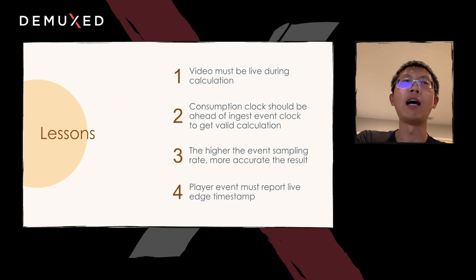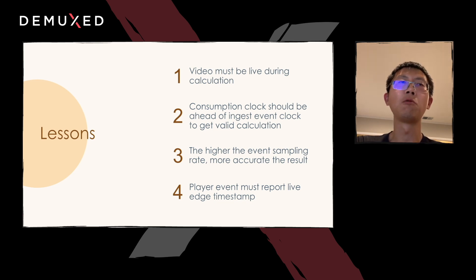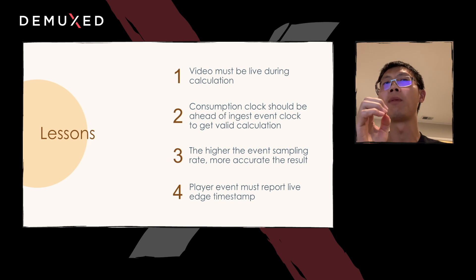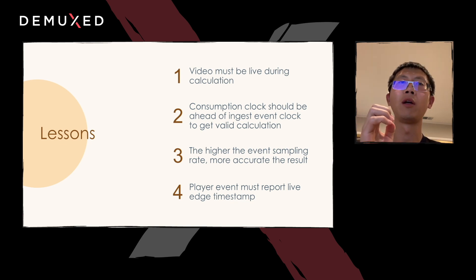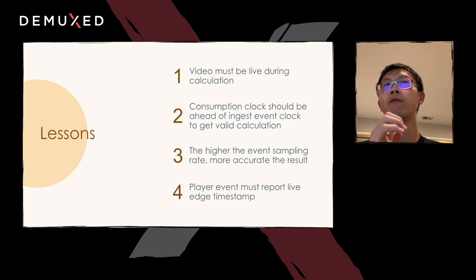We have discussed enough technical stuff. Here are some of the lessons we learned from the process. First, those videos must be live in all computations; otherwise the result will be inaccurate. Second, the consumption clock at the consumption end needs to be ahead of the ingestion event clock; otherwise the result cannot really reflect the real delay. Third, the latency calculation turns out to be more accurate if the sampling rate from both the player and the ingestion gets higher. And finally, the player should always report the live edge timestamp — if it does not report that, the latency will be highly skewed.